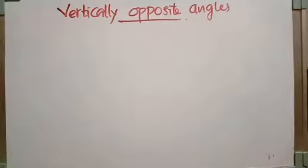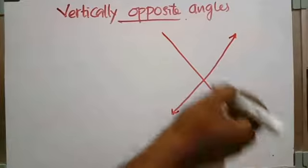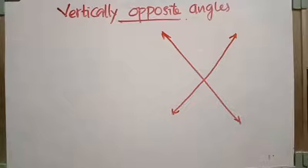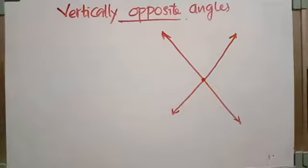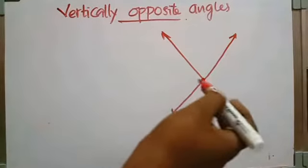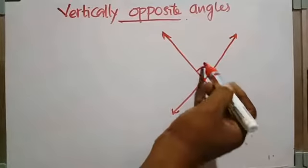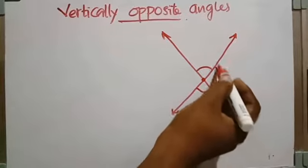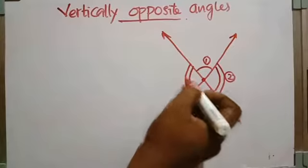Vertically opposite angles — have you heard about vertically opposite angles? This is also a pair. To remember vertically opposite angles, remember the letter X, which represents two lines intersecting each other at a point. The shape formed is X. When two lines intersect each other, four angles are formed: angle one, two, three, and four.